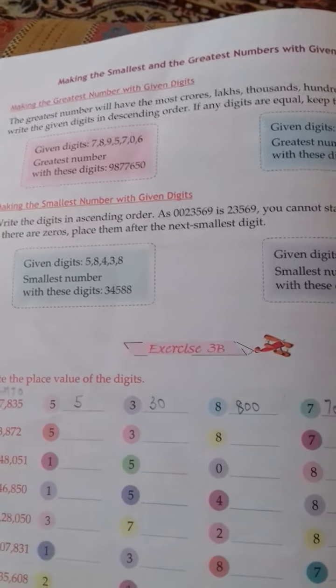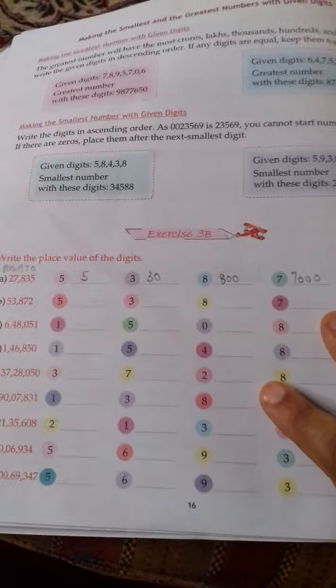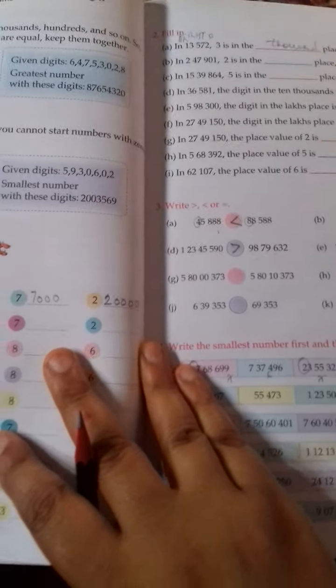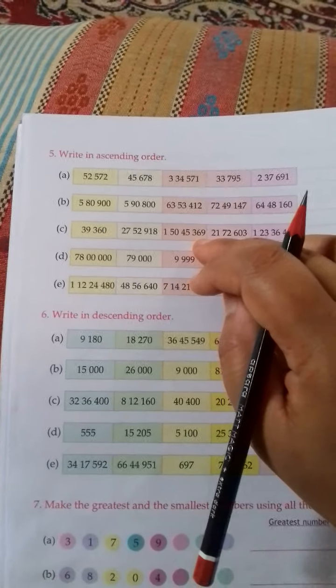Good morning class 4. We are doing chapter number 3, large numbers, and we are on exercise 3B. Yesterday we did question number 1, 2, 3, and 4. Today we will do question number 5 and 6.